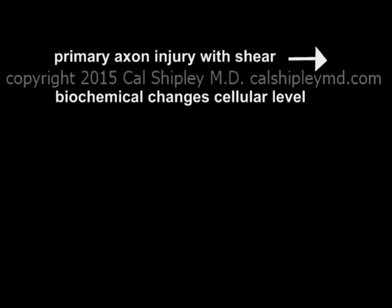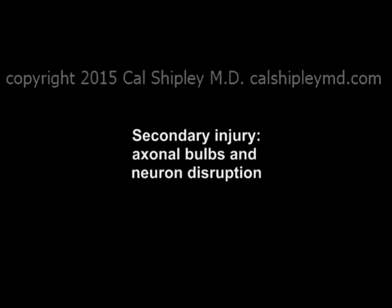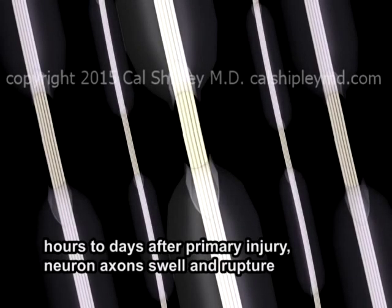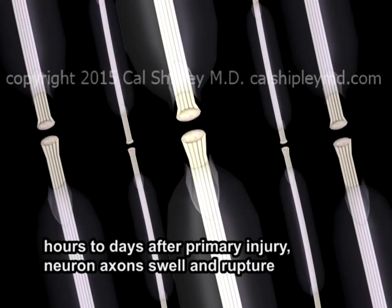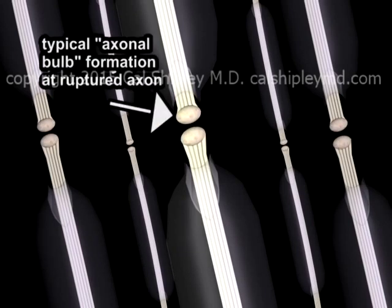This is known as secondary injury, and it appears to occur in two forms. The first form of secondary injury involves swelling and rupture of the nerve axons, with formation of characteristic axonal bulbs on the ruptured ends. This results in an immediate loss of nerve impulse transmission across the axons.